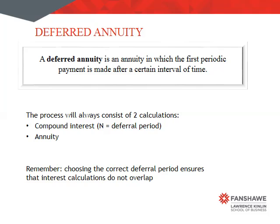So, you probably have already looked at what a Deferred Annuity is. We are talking about periodic payments that are going to begin only after a certain waiting period or interval of time, which is called the deferral period. This process is always going to consist of two calculations — one is the compound interest calculation, where we need to carefully decide on our deferral period.